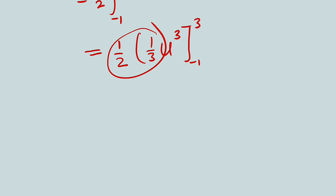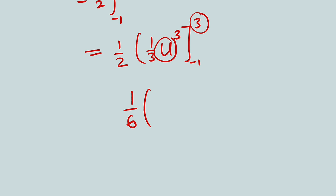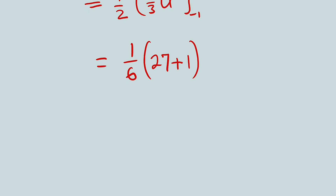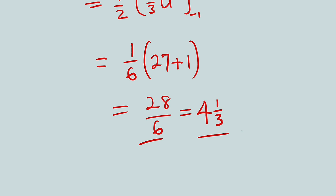Multiplying 1 over 2 and 1 over 3 together, we obtain 1 over 6. So we have 1 over 6 multiplied by: substituting the upper limit, 3 to the power of 3 is 27. Then minus: substituting the lower limit, negative 1 to the power of 3 is negative 1, and with another negative sign it becomes positive 1. Finally, we have 28 divided by 6. 6 goes into 28 four times with a remainder of 2, and 2 over 6 is 1 over 3. So the result is 4 and 1 over 3.